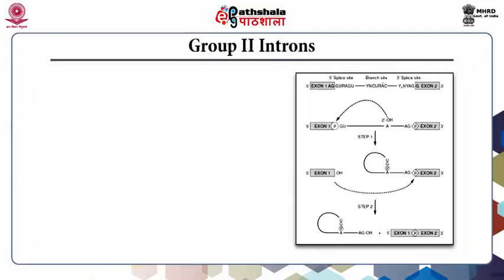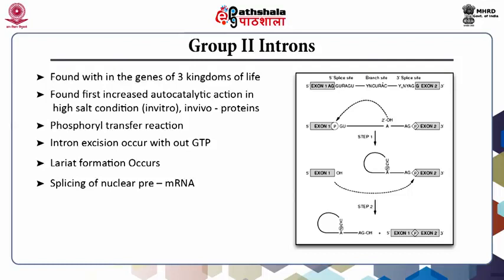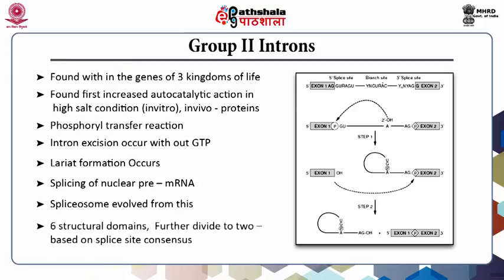Group 2 introns are another type of autocatalytic RNA present in all domains of life. Catalytic activity was found even at hypersaline conditions in vitro; however, protein counterparts are associated for in vivo splicing. Group 2 ribozymes perform GTP-independent intron excision involving lariat intermediates, and the spliceosome has also evolved from Group 2 introns with a structural similarity of domain 5 substructure to U6 snRNA. Their site-specific mobilization to DNA regions can be used as a tool for biotechnology.